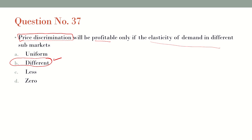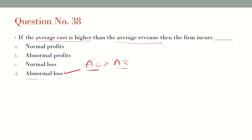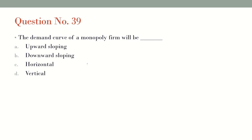Question number 38: If the average cost is higher than the average revenue, what does the firm incur? We are talking about average cost versus average revenue. If AC is greater than AR, then the firm incurs a loss. When cost is greater than revenue, the obvious result is loss. So the answer is abnormal loss.